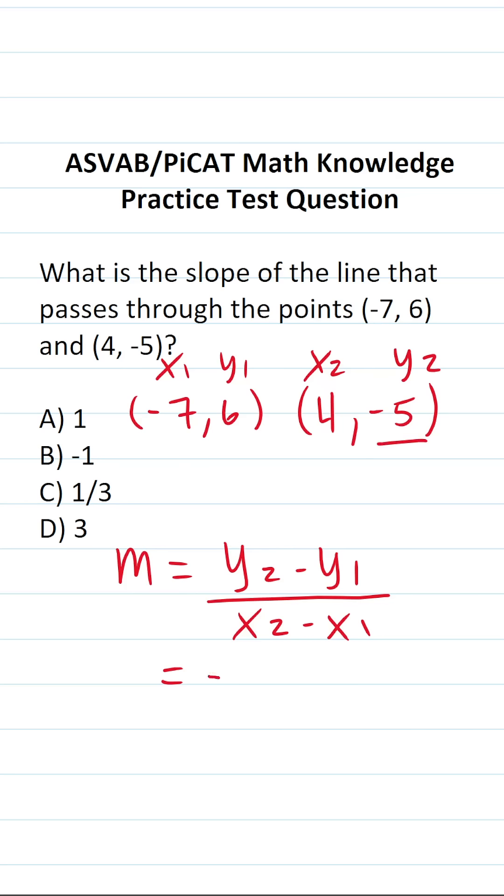Again, y2 is right here. It becomes -5 minus y1, which is 6, all over x2, which is 4, minus x1, which is -7.